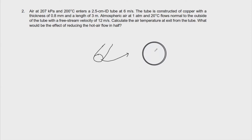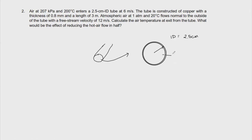So basically, the inner diameter — let's represent it as Ri — is equal to the inner diameter given, which is 2.5 cm. And then this 2.5 cm has a certain thickness of 0.8 mm, as stated in the problem. And the length of this pipe extends to 3 meters.